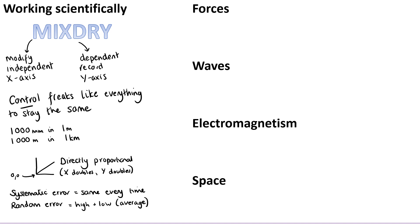Then you might choose to have something to do with the actual topics that are going to be on this paper. So if you're taking combined science, that's forces, waves, and electromagnetism. If you're taking GCSE physics, then you'll also have space.